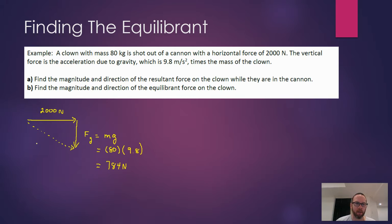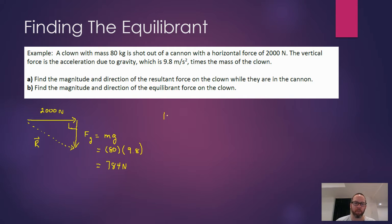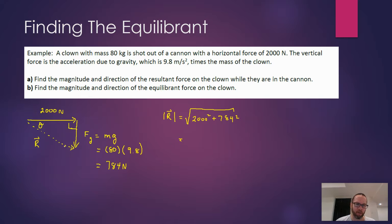Our goal in part A is to find the resultant — the net force — which will point down and to the right. We want to know how big it is and what direction it's in. Because this problem breaks down into a horizontal component and a vertical component, we have a right angle triangle. We can use right angle triangle trigonometry: Pythagorean theorem for the magnitude, giving the square root of 2000 squared plus 784 squared, and then the tangent ratio for direction.